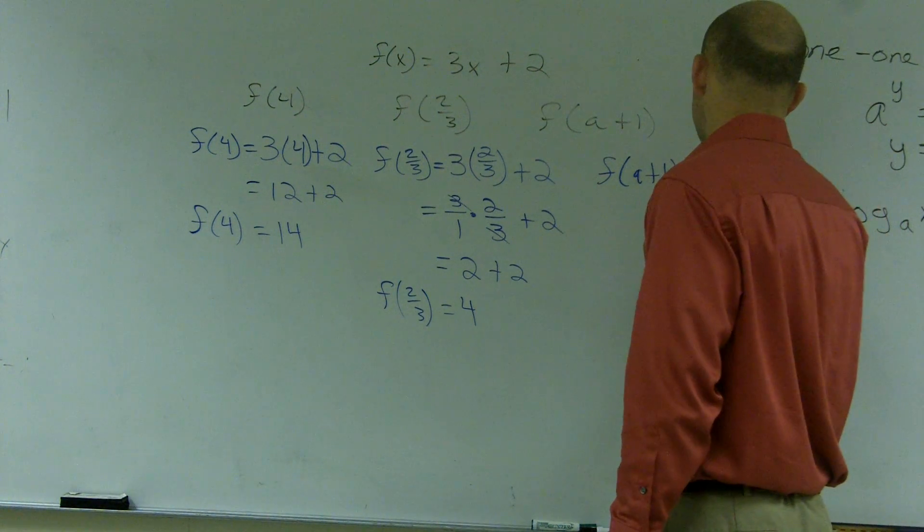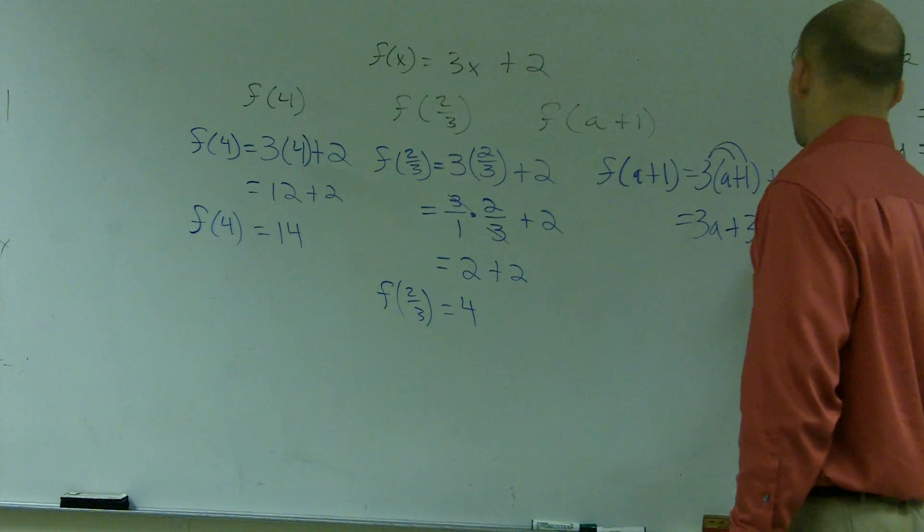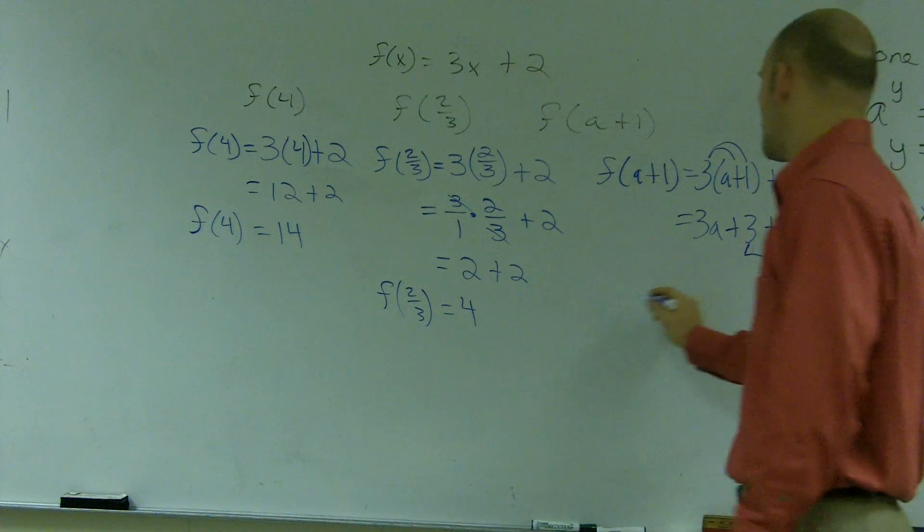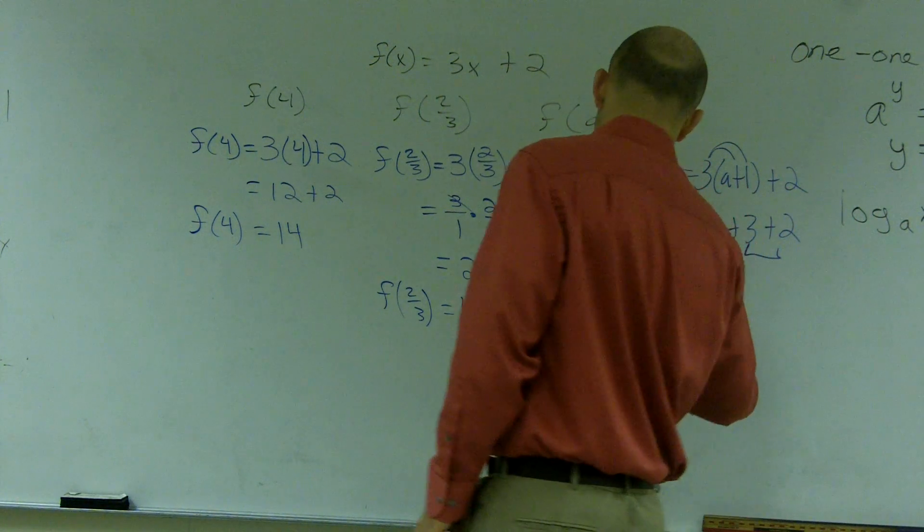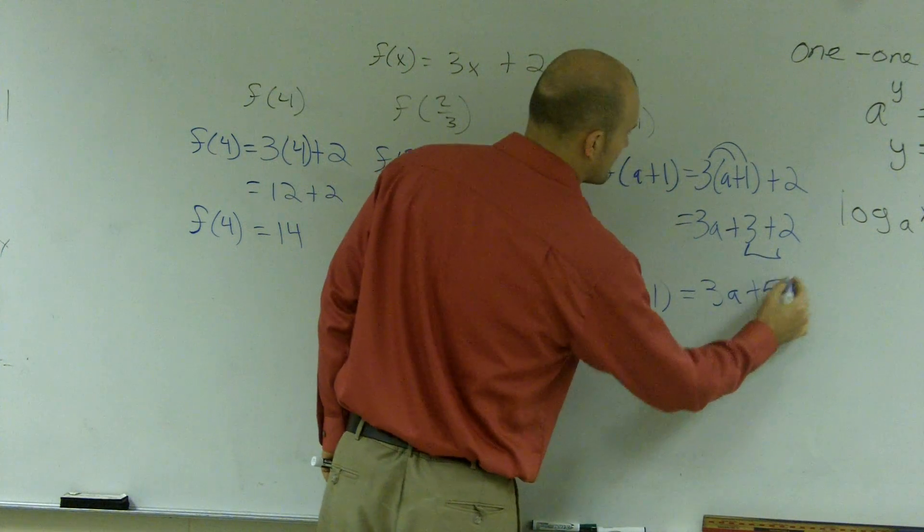So 3 times a, we represent as 3a. 3 times 1 is 3 plus 2. I can now simplify these two terms so I can say f of a plus 1 is equal to 3a plus 5.